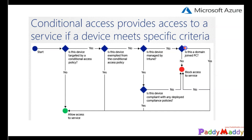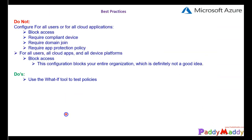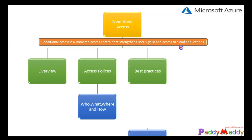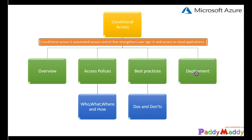If the device is Azure AD joined or hybrid joined, access is granted. We'll perform this kind of workflow in the upcoming demo. To summarize this lecture: we covered the definition of conditional access under the overview, policies including who, what, where, and how, best practices with do's and don'ts, and deployment configurations and how the UI looks. We'll demonstrate everything in the next lecture. Thank you for watching.